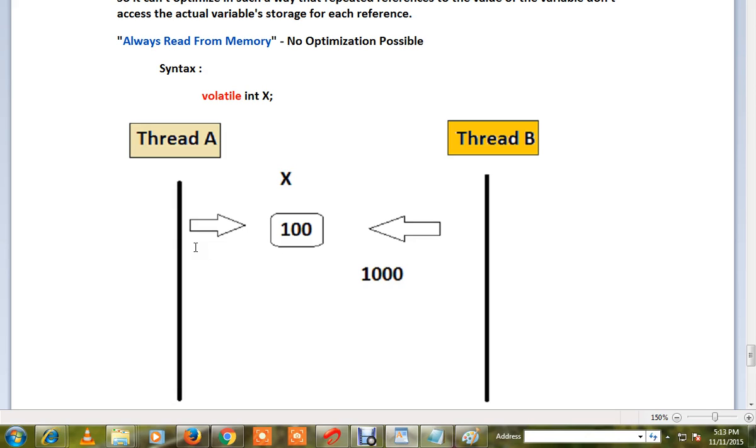If you don't mark this variable as volatile, it's going to take its own reference value and proceed. So your program will work in an inconsistent way. You have to mark this variable as volatile.